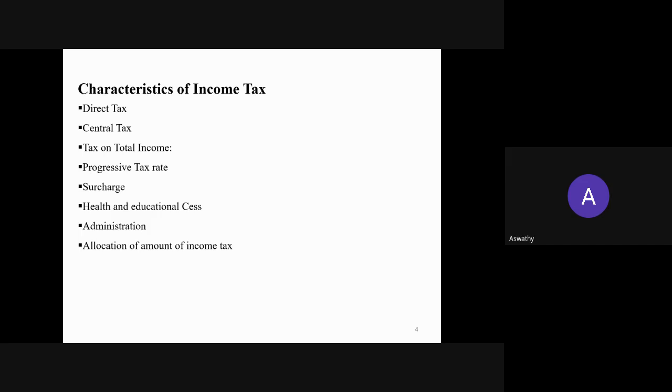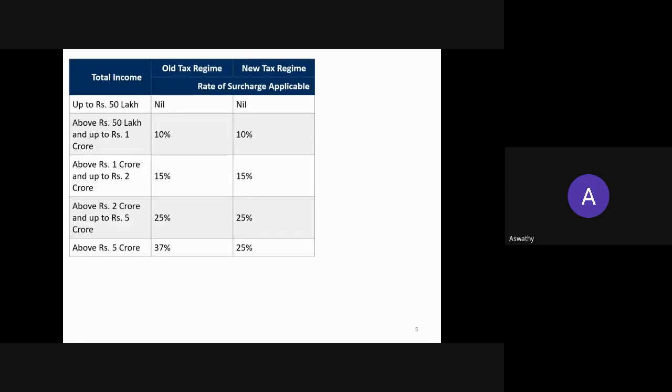The administration of income tax is by CBDT, that is the Central Board of Direct Taxes, which is a department under the Ministry of Finance. Regarding the allocation of income tax, all the income under income tax is allocated among the central and state governments. But in the case of some incomes like income from companies, and any amount of surcharge and health and education cess, that is not shared with the state government. All other incomes are allocated among the central and state governments.